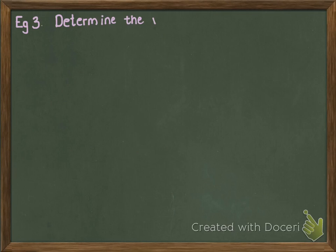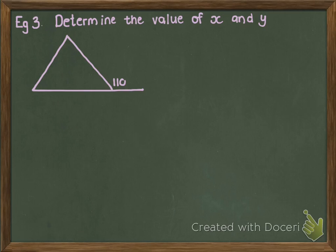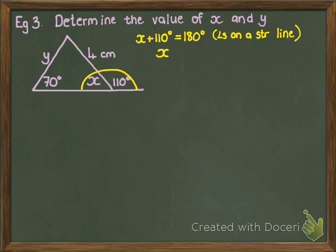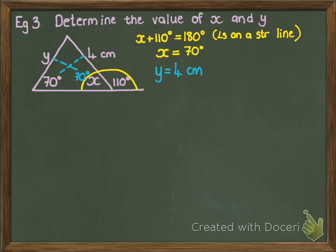Let's look at an example: determine the value of X and Y. There's a triangle with an exterior angle of 110 degrees, one side of 4 centimeters, the other side Y, and angles X and 70 degrees. Since angles on a straight line add to 180 degrees, X plus 110 equals 180, so X equals 70. Now I have two equal angles in my triangle, making it isosceles, which means the sides opposite these equal angles are also equal. So Y must be 4 centimeters, because Y and 4 are sides opposite equal angles.